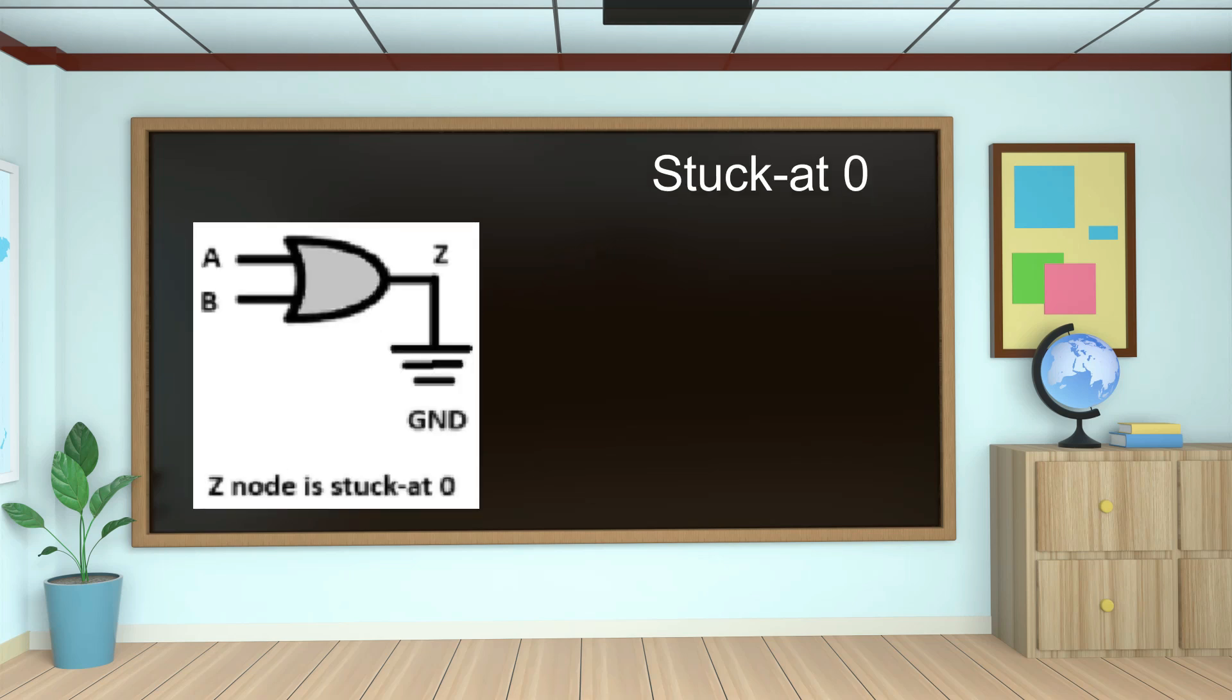Similarly, if a node is always at 0, that node is said to be at stuck-at-0. In the figure, we can see output of OR gate is stuck at 0. Irrespective of values of A and B, Z will always be at 0 due to stuck-at-0 fault.